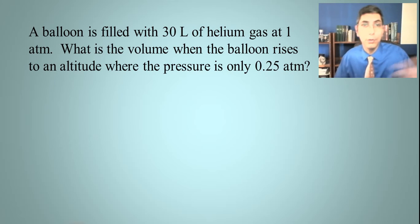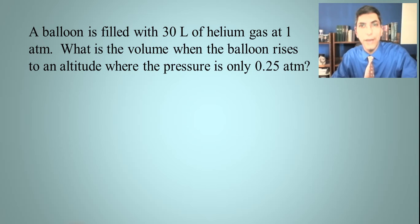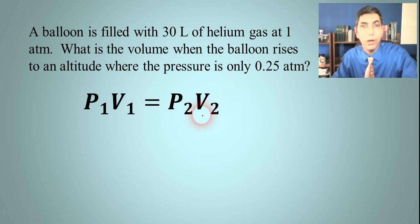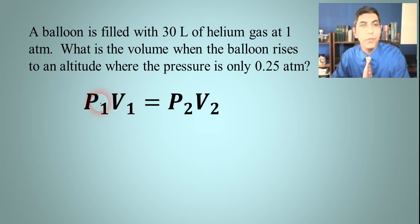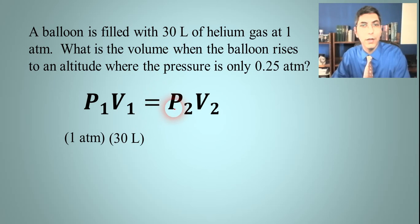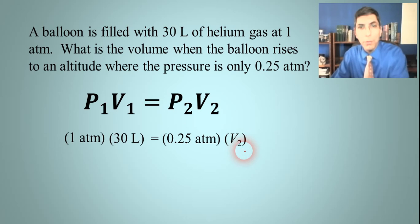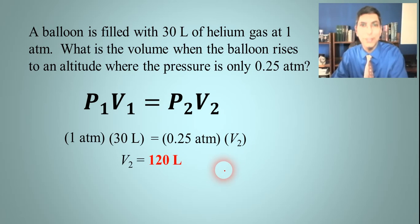Let's try a Boyle's law problem. A balloon is filled with 30 liters of helium at 1 atmosphere. What is the volume when it rises to an altitude where the pressure is 0.25 atmospheres? Plugging into p1v1 = p2v2: p1 is 1 atmosphere, v1 is 30 liters, p2 is 0.25 atmospheres, and we solve for v2. The answer is 120 liters.